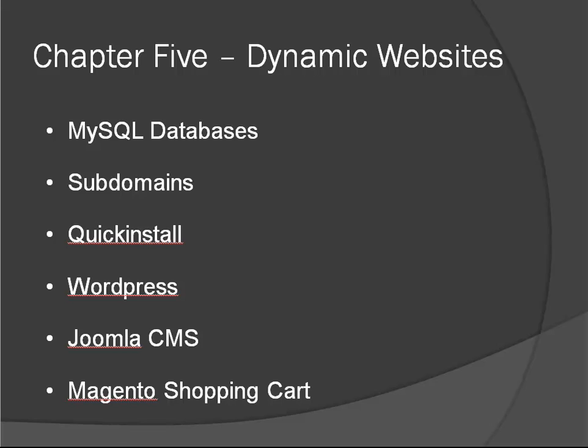Finally, we'll look into dynamic websites — platforms like WordPress, which is a blogging system; Joomla, which is a content management system; and Magento, which is an e-commerce platform or shopping cart. We're going to be installing all of these with Quick Install, which comes with cPanel and HostGator. We'll also show you how to create MySQL databases, create a couple of subdomains, and install WordPress, Joomla, and Magento each on their own subdomain.